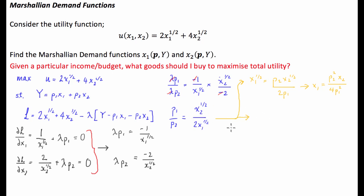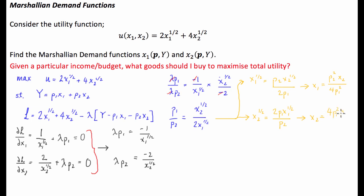We can also express X2 in terms of X1. Leaving X2 where it is and rearranging: X2 to the half equals 2P1 X1 to the half over P2. Squaring both sides gives X2 equals 4P1 squared X1 over P2 squared.